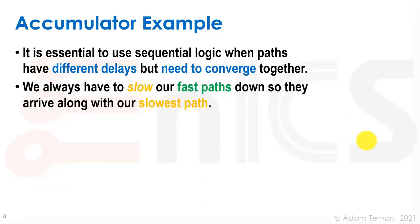So it's essential to use sequential logic when paths have different delays but need to converge together. We always have to slow down our fast paths so they arrive along with our slowest path. So again, we always look at our slowest path and we have to take all the faster paths, slow them down so they arrive at the right time.